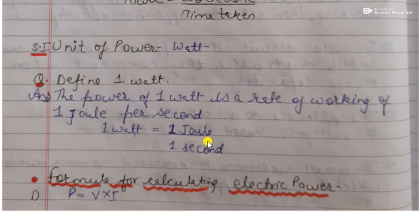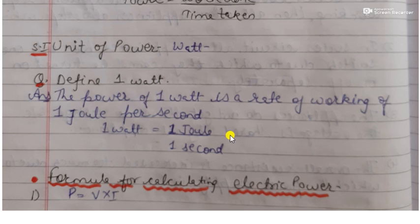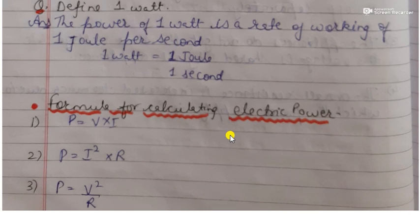If one joule of work is done in one second, then the power would be one watt. So we can say the power of one watt is the rate of working of one joule per second. We have different formulas for calculating the electric power.